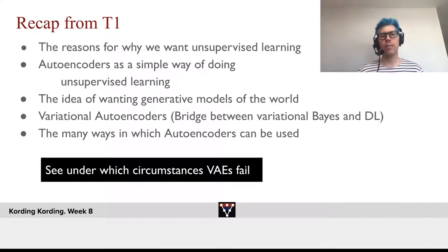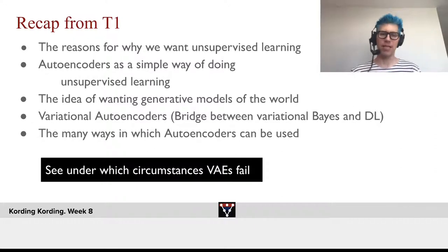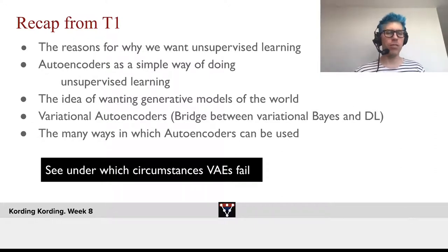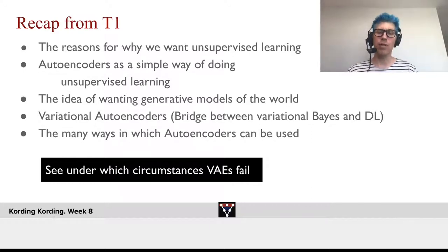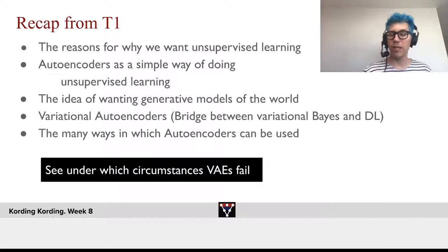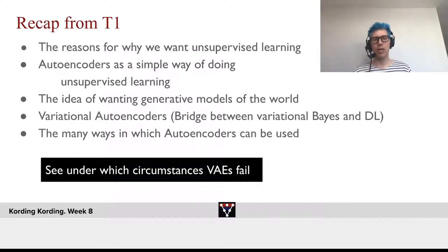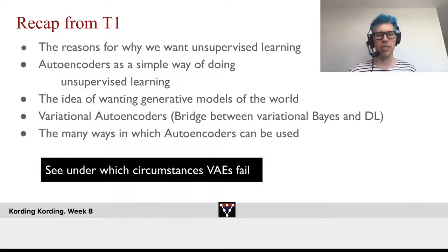We learned about the reasons for why we want unsupervised learning. We also saw autoencoders as a simple way of doing such unsupervised learning. We learned about the idea of wanting generative models of the world, why that's useful, and we learned variational autoencoders as one way of doing that.